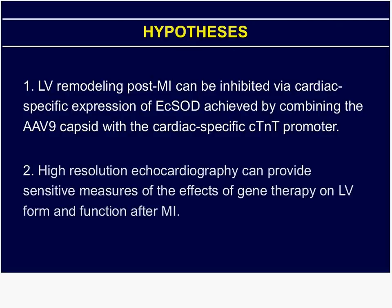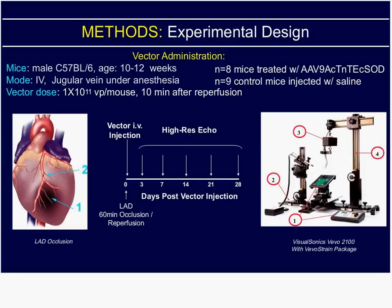The hypotheses here were: first, that we could inhibit LV remodeling with cardiac-specific expression of EC-SOD; and second, that higher-resolution echo could provide sensitive measures of the effects of gene therapy on LV form and function after MI. These were male C57 black 6 mice aged 10 to 12 weeks at the beginning of the study. We used a jugular vein injection under anesthesia to ensure that we got all of the viral vector in.